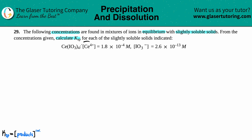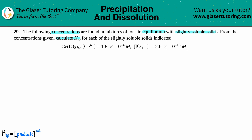They told us the concentration of the two ions. The Ce4+ is 1.8 times 10 to the negative fourth molarity, and the IO3- is 2.6 times 10 to the negative 13th molarity. So we just have to find the Ksp, the solubility product.